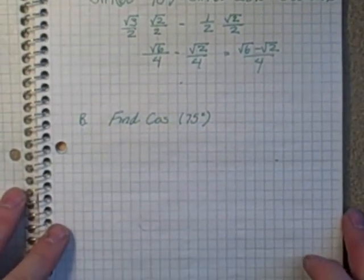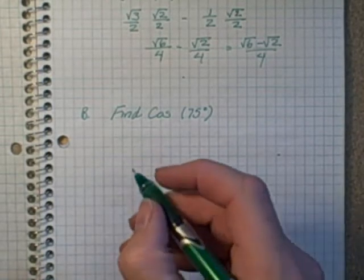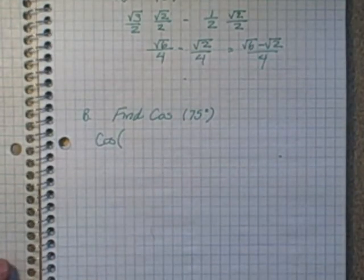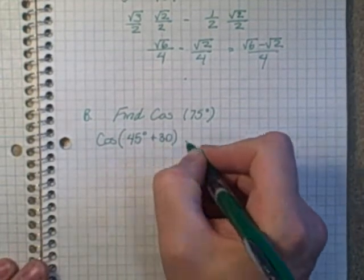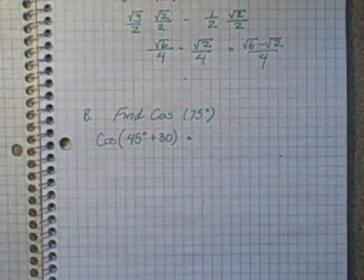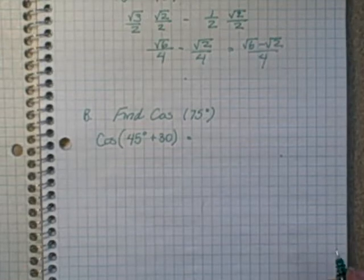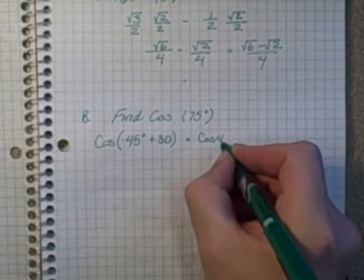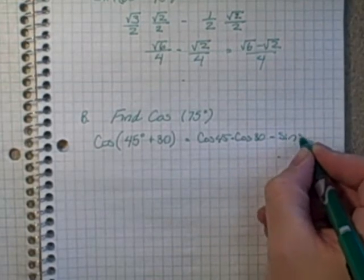We're going to do one more question - an addition one using the cosine addition formula. This would be cosine of 45 plus 30 degrees, which gives you 75 degrees. I'm looking at page 258, and the cosine addition formula is just the cos of both angles multiplied together, subtracting the sine of both angles multiplied together. So it would be cos(45°) multiplied by cos(30°), subtract sin(45°) times sin(30°).